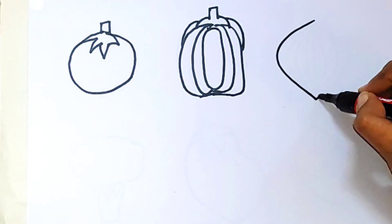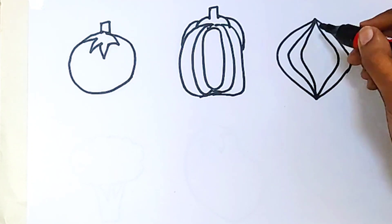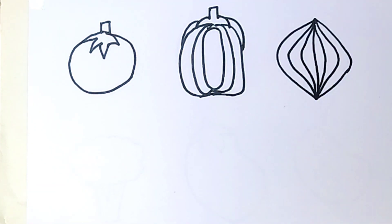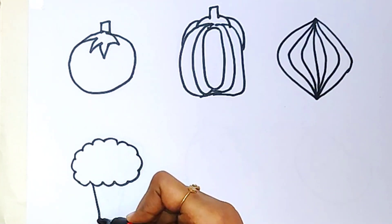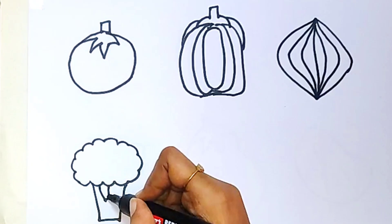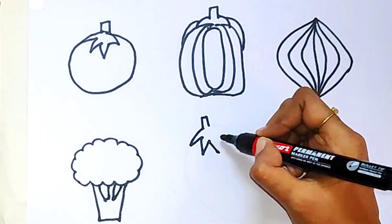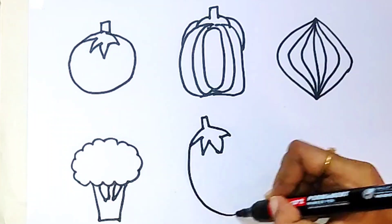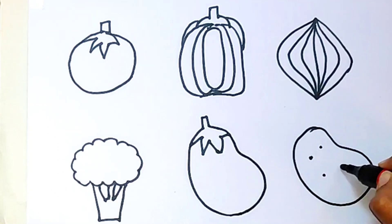Next vegetable is... yes, onion. This is the onion. This is a broccoli. Next one is brinjal. This is a potato.